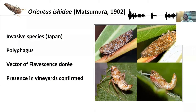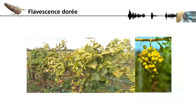Orientus Ishidae is a leafhopper originally from Japan that is an invasive species in many countries. Right now it's spread almost all over Europe. It's a highly polyphagous insect — it feeds on many different plants, although it has a preference for willows. It has been shown that this insect is a vector of a plant disease, Flavessens doré, which is especially important for vineyards in Europe. The presence of this insect in vineyards has already been confirmed, so it's a potential pest.